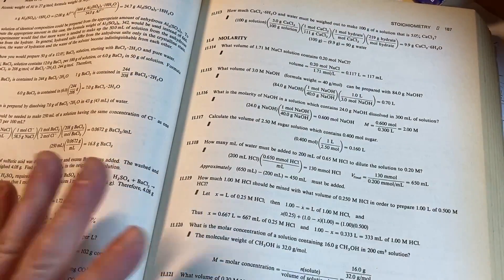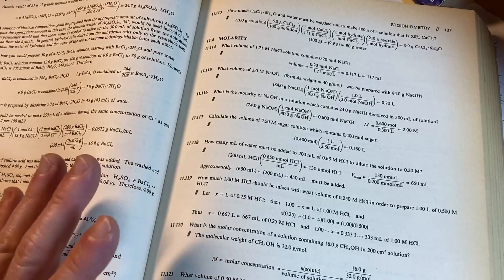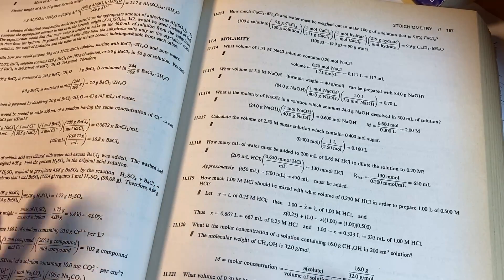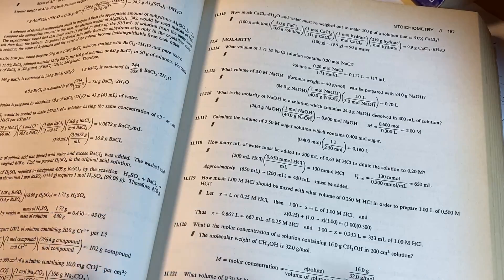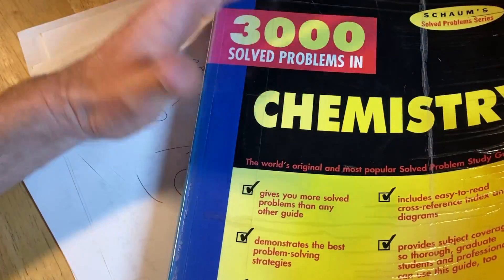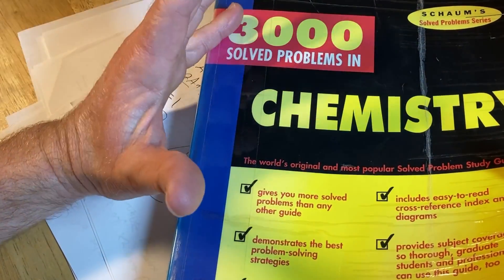But this is going to help you learn chemistry more because you learn by doing. It's just like mathematics. Just like Paul said, whenever you're trying to learn a new subject, get as many examples as you can. Again, this book instantly gives you 3,000 solved problems in chemistry.